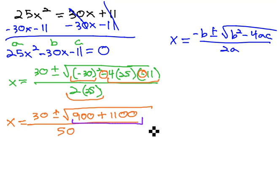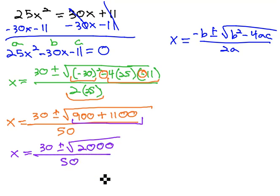Now we can add inside the radical to get x equals 30 plus or minus the square root of 2000, all over 50.